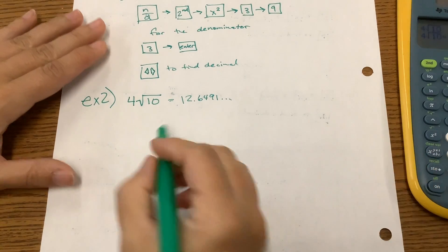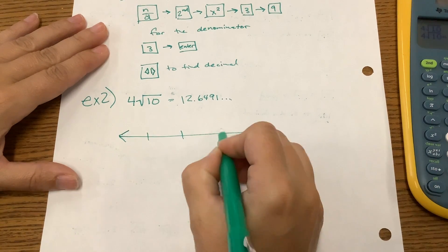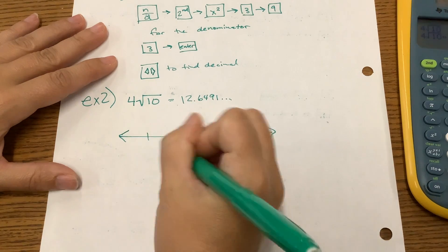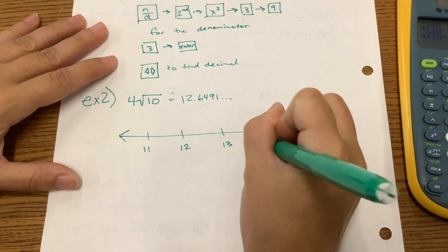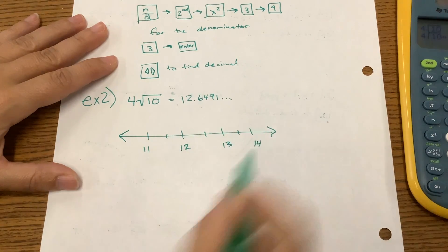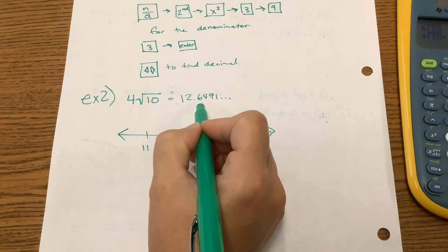And if we put this on a number line, what two numbers is that between? 12 and 13. So 11, 12, 13, 14. I'm going to put my half marks. So it's between 12 and 13. Which one is it closer to? The 12 or the 13? It's closer to 13 because that 6 is greater than 5, right?